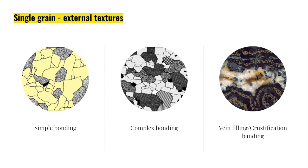Vein filling textures can be of two types: crustification banding, and comb or cockade texture. Crustification banding results from successive deposition of minerals derived from open fractures or fissure walls. It may be multi-mineralic or rhythmic, showing different depositional events. Whereas comb or cockade texture results from growth of crystals outwards from the walls of open fractures.